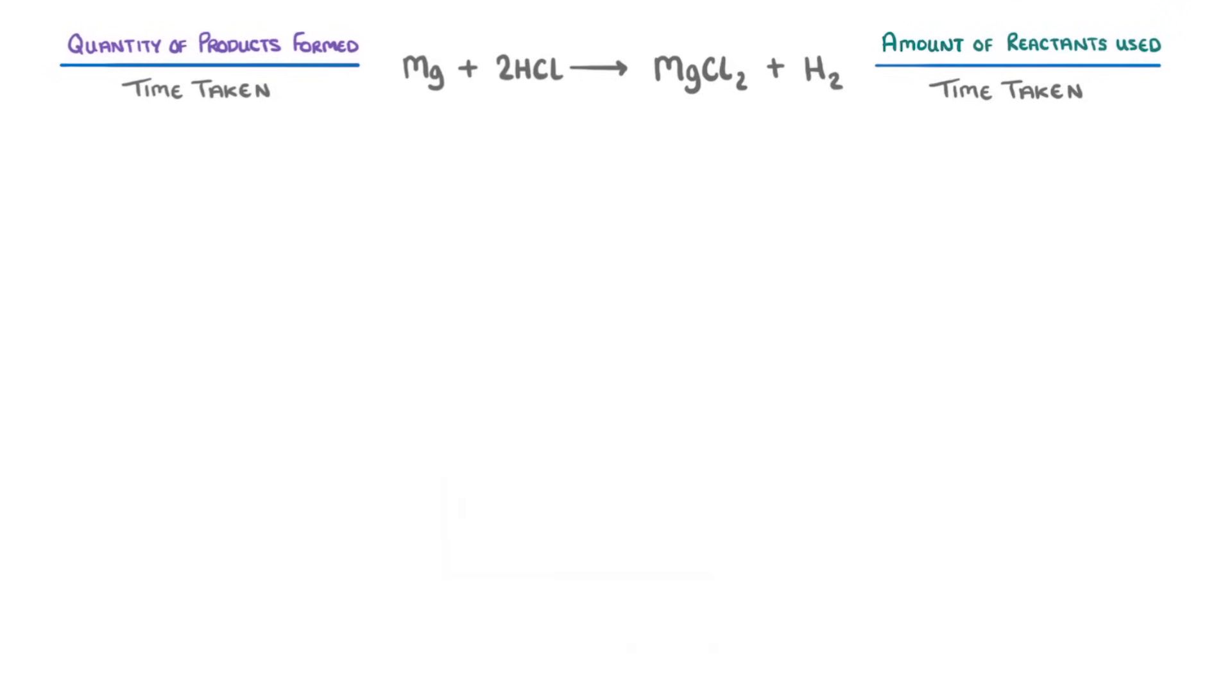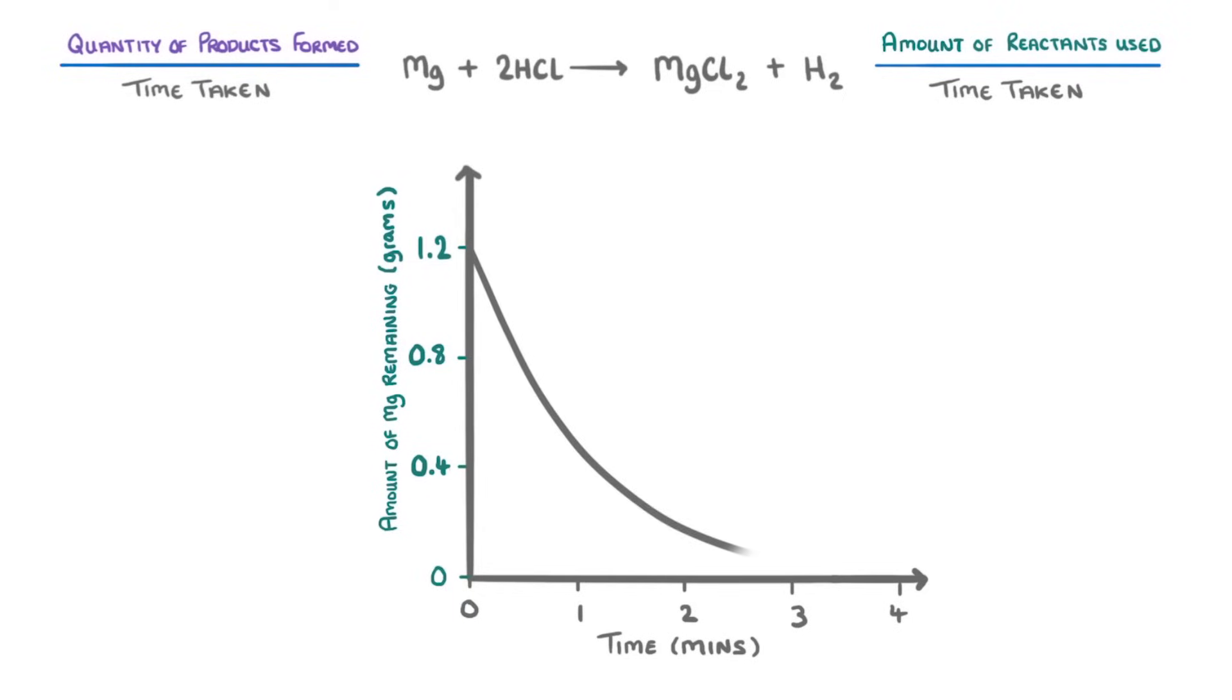Before we finish, I just want to point out that we could also have done the same thing with a graph that plotted the amount of magnesium remaining against time. This time though, the graph would have started with however many grams we used in our reaction, so in this case 1.2g, and then would have declined rapidly at first, but then more slowly.